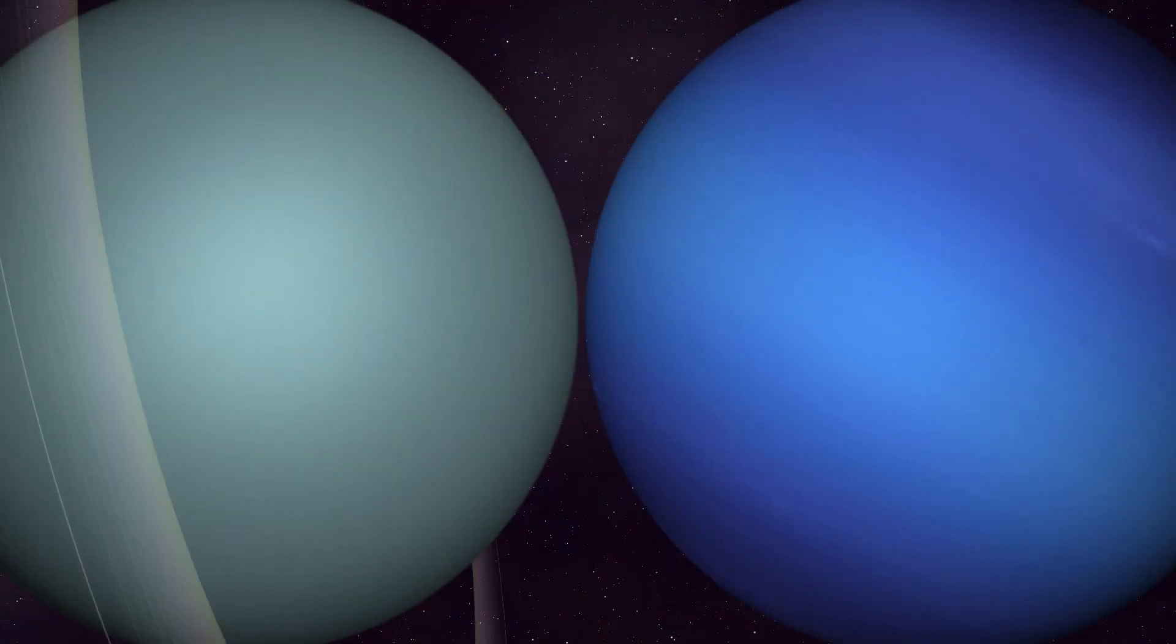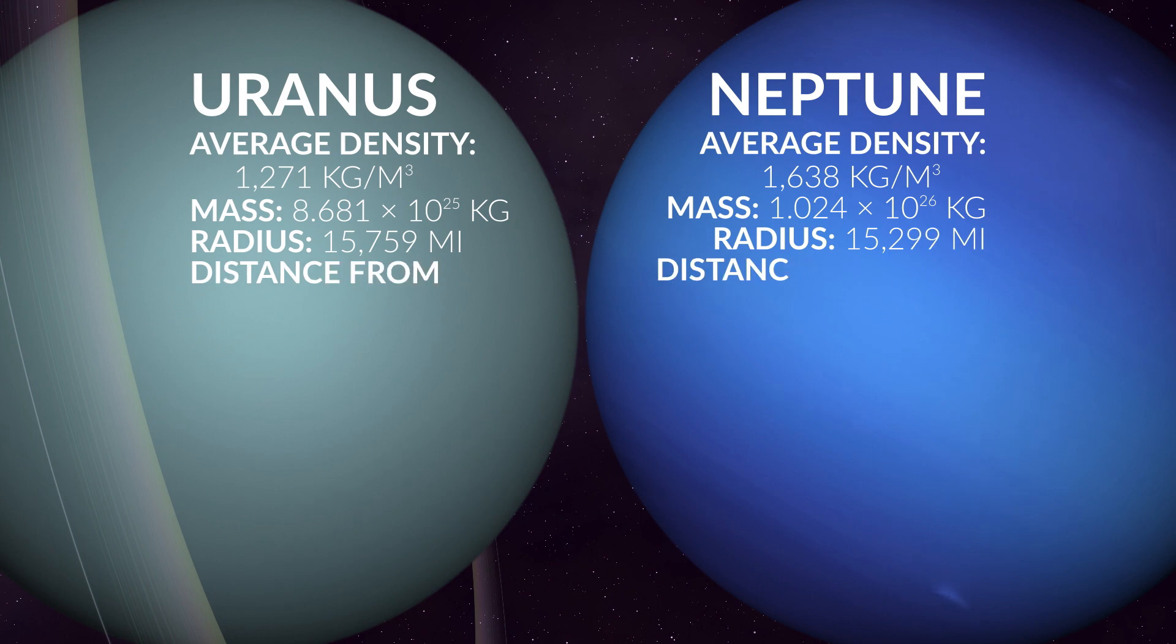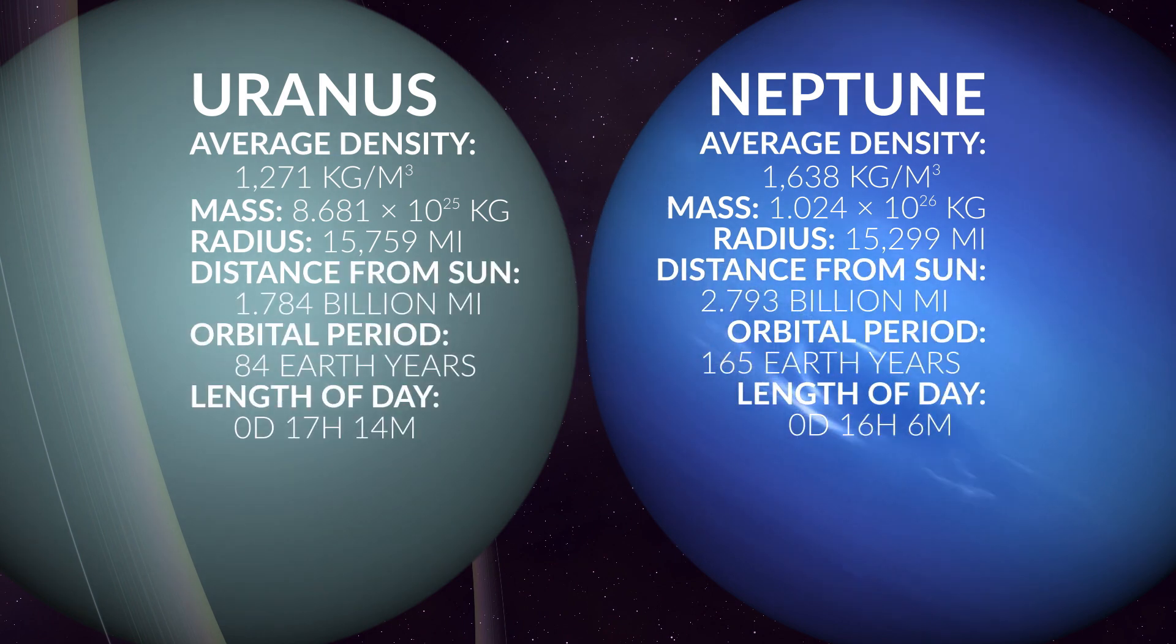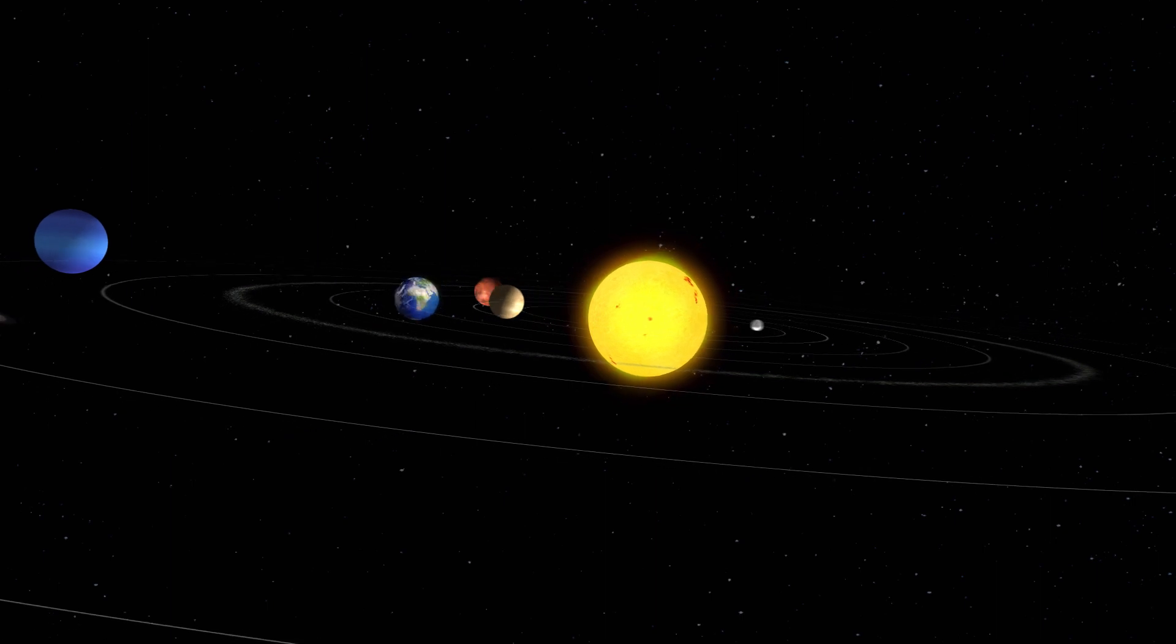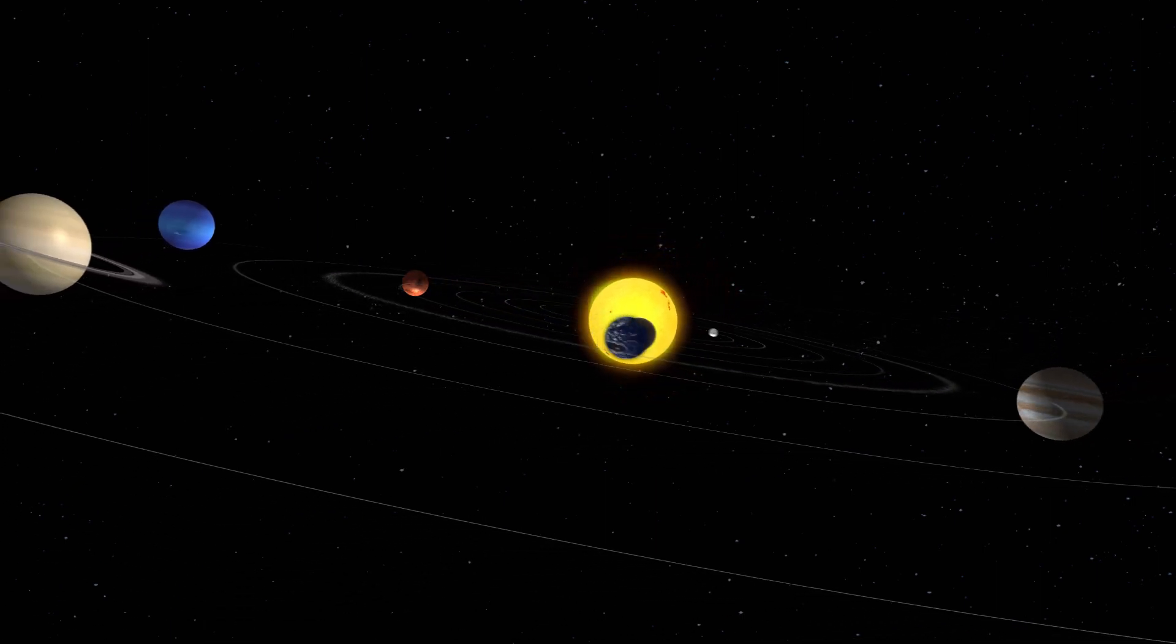While they have similar atmospheric compositions, there is a difference in their overall density. Uranus is slightly larger in diameter, but Neptune is slightly more massive. Each planet presents some unique characteristics as we consider their roles in our solar system.